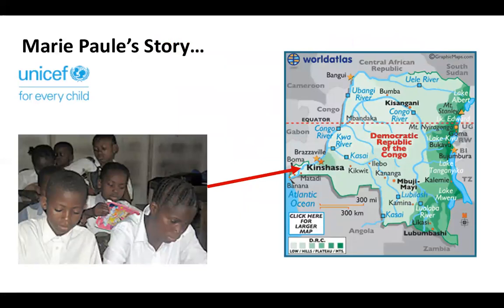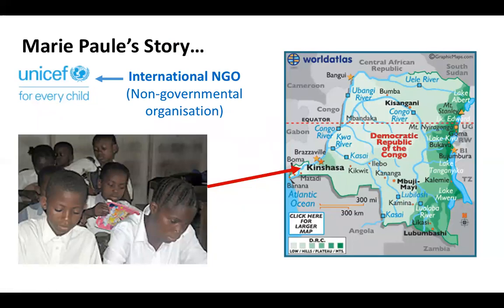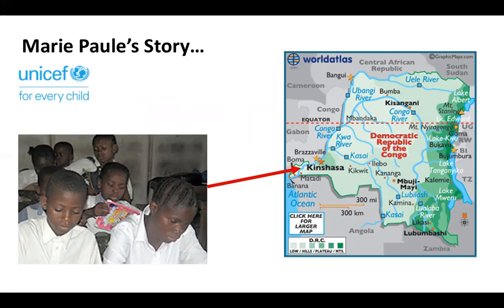We're going to consider a personal story, which is the best way to think about quality of life — what barriers have held back a child like Mary Paul. This is a true story from the NGO UNICEF, an international NGO that works all over the world. NGOs are really important because they often provide services that governments aren't able to provide, creating a voice for people who otherwise couldn't access the resources needed for a good quality of life.